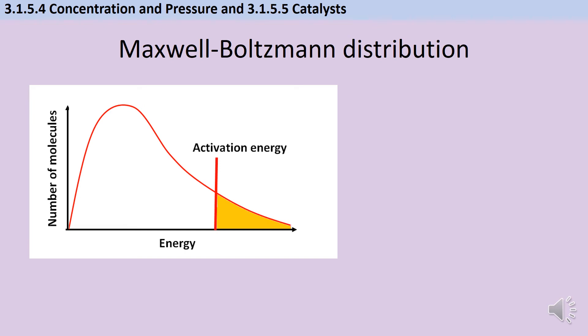When we add a catalyst, what we do is to change the position of this line and move it to the left. Now, anything to the right of the new green line does have sufficient energy and will react. So this newly shaded green area represents particles which, when there was no catalyst present, wouldn't have reacted. But now that a catalyst is present, their collisions will be successful, and a reaction will happen.